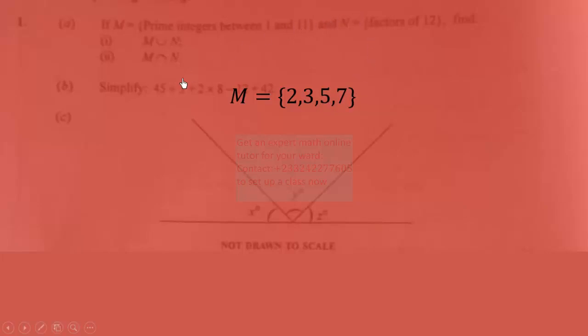Now the second set is factors of 12. So the factors of 12 are 1, 2, 3, 4, 6, and 12 itself.